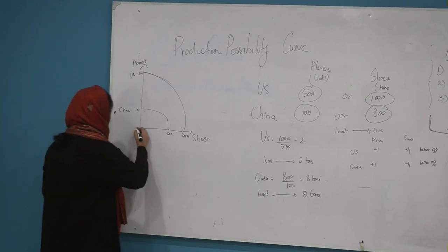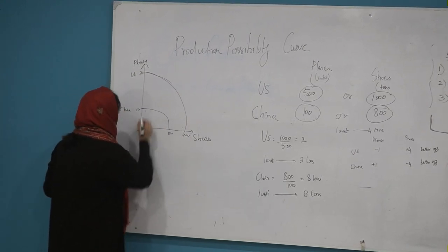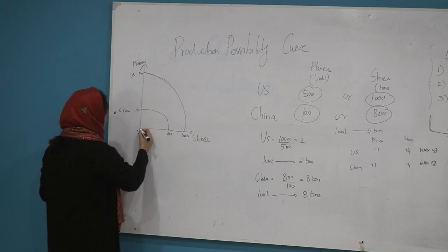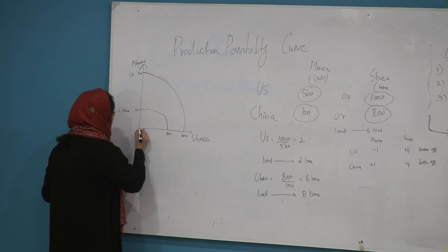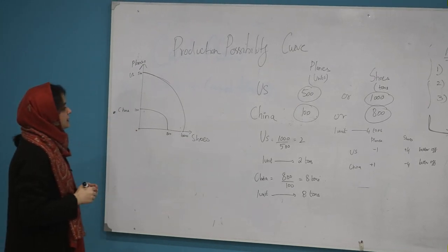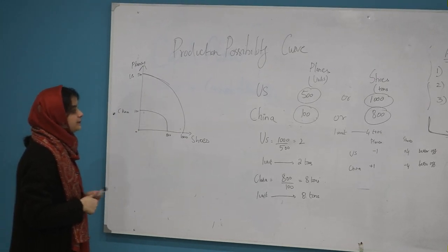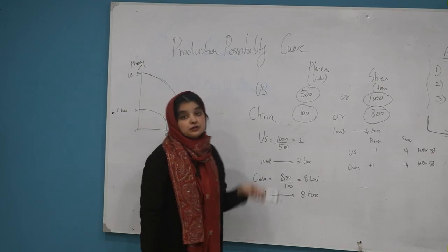This is just like this graph. If you are making 500 units of planes, then it will be zero shoes. And if you are making 1000 tons of shoes, then it will be zero planes. Now we have to see what is the absolute advantage.